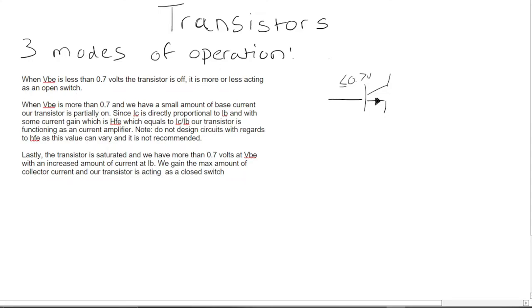When VBE is more than 0.7 volts, we have a small amount of base current and our transistor is partially on. Since IC is directly proportional to IB with some current gain, which is HFE. So this transistor always has a gain, you will find it in the datasheet, which is HFE.